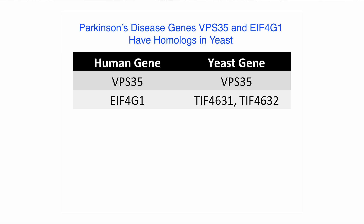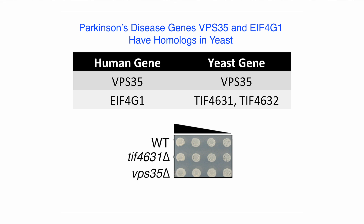In our paper, we used the budding yeast, Saccharomyces cerevisiae, genetic screening, and validation in animal models to study a new set of Parkinson's disease genes. Two of the newer genes implicated in Parkinson's disease are EIF4G1 and VPS35. EIF4G1 encodes a translation initiation factor, and VPS35 is a component of the retromer complex, which is involved in protein sorting. The yeast homolog of VPS35 is also called VPS35, and EIF4G1 has two homologs in yeast called TIF4631 and TIF4632.